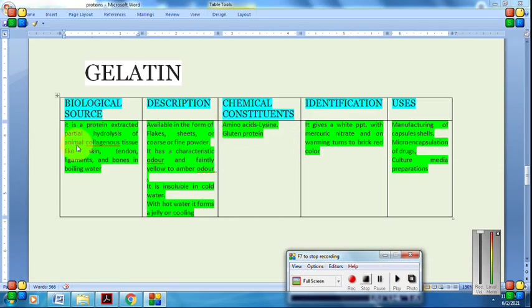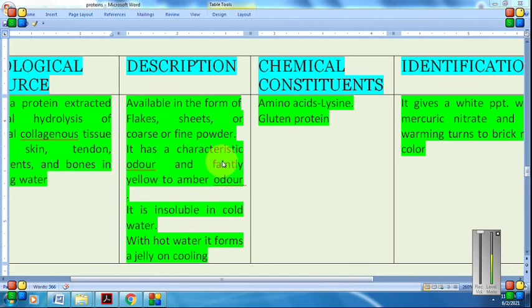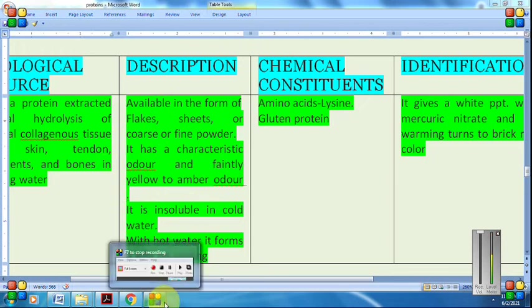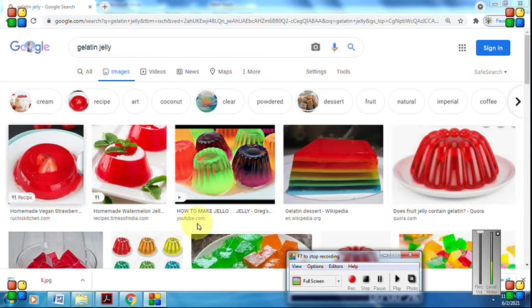Tendons are tough, highly tensile strength, dense fibrous connective tissue that connects muscle to bone. For description, gelatin is available in the form of flakes, sheets, coarse powder, or fine powder. It has a characteristic odor and a faintly yellow to amber color. It is insoluble in cold water, but with hot water it forms a jelly on cooling. If we put it in warm water, it will become a gel-like substance, a jelly.